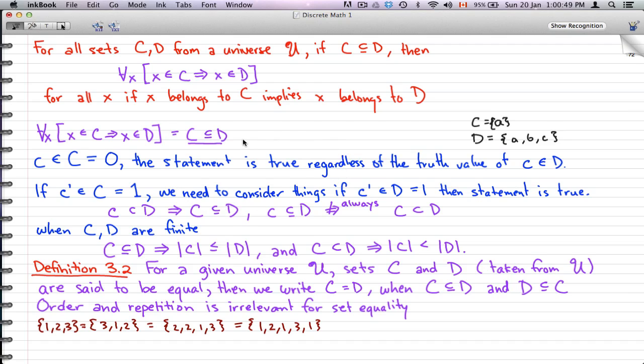But what happens if C prime belongs to C equals 1? Then we need to consider the situation if C prime belongs to D is also true. If C prime belongs to D is 1, then the statement is true. If it doesn't, then C is not a subset of D.